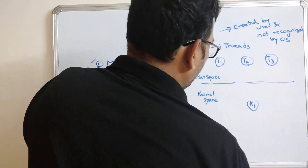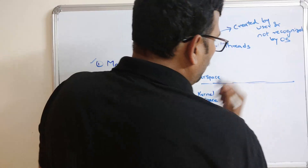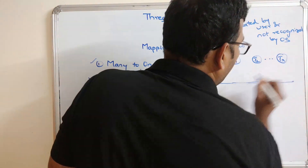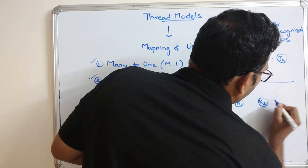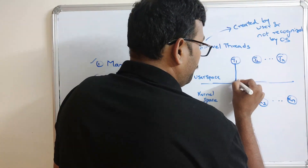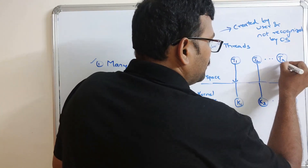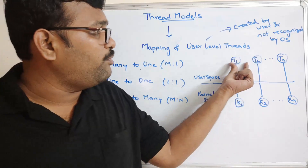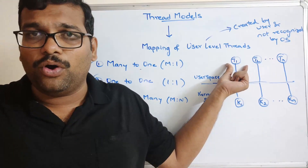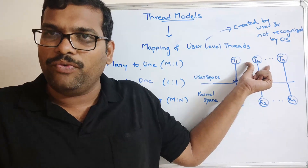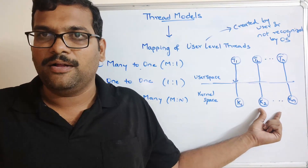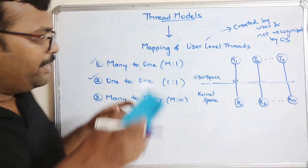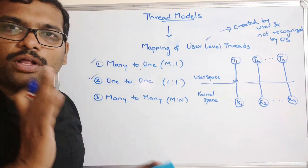In the one-to-one model, each and every thread is mapped to each and every kernel individually. So the problem is solved: if T1 is in a blocking state waiting for an IO operation, T2 need not wait — it will be executed by another virtual processor, K2. Similarly, T3 will be executed by one more kernel. So one-to-one overcomes the disadvantage of the many-to-one model.